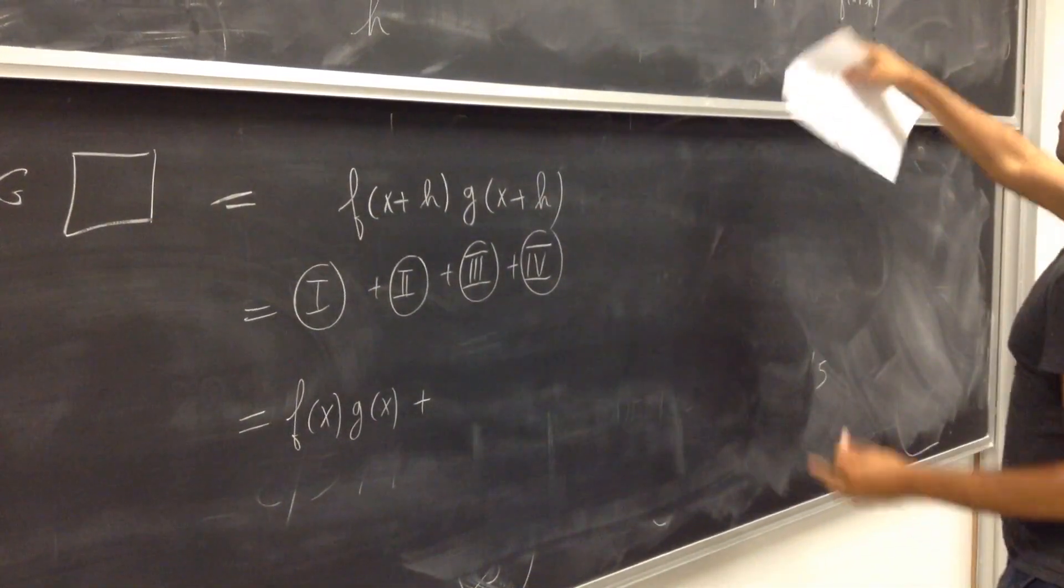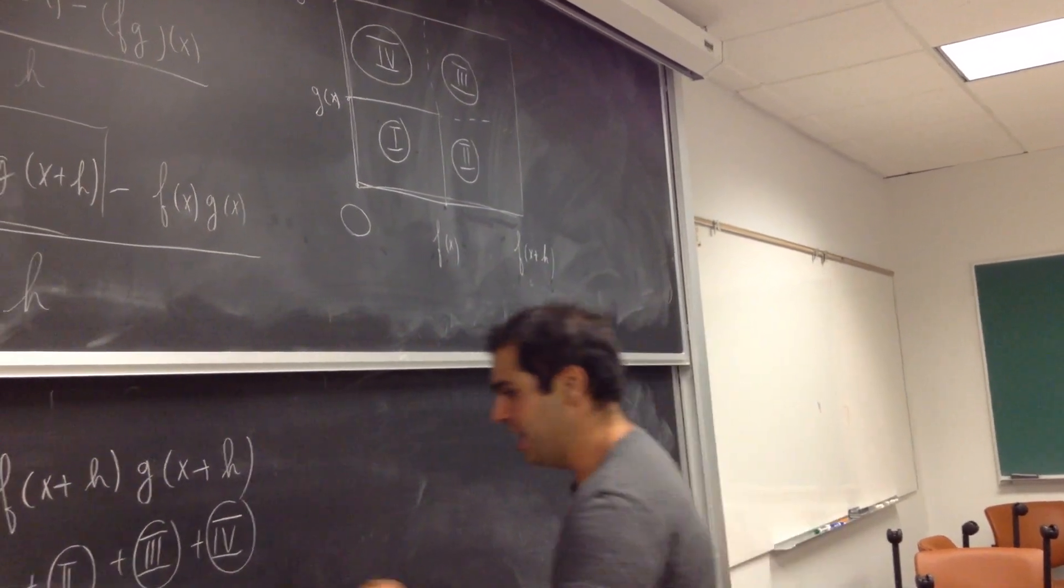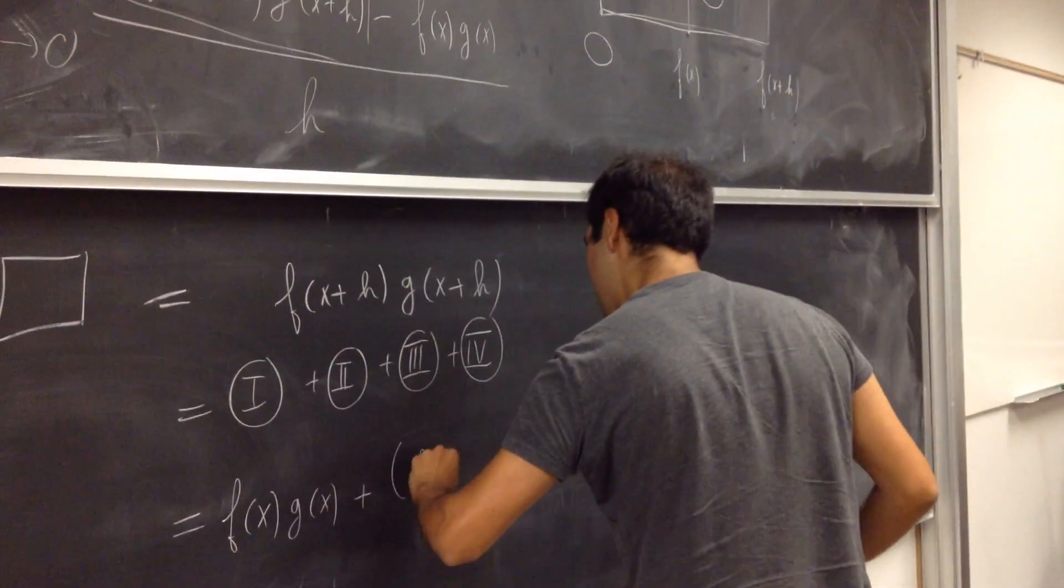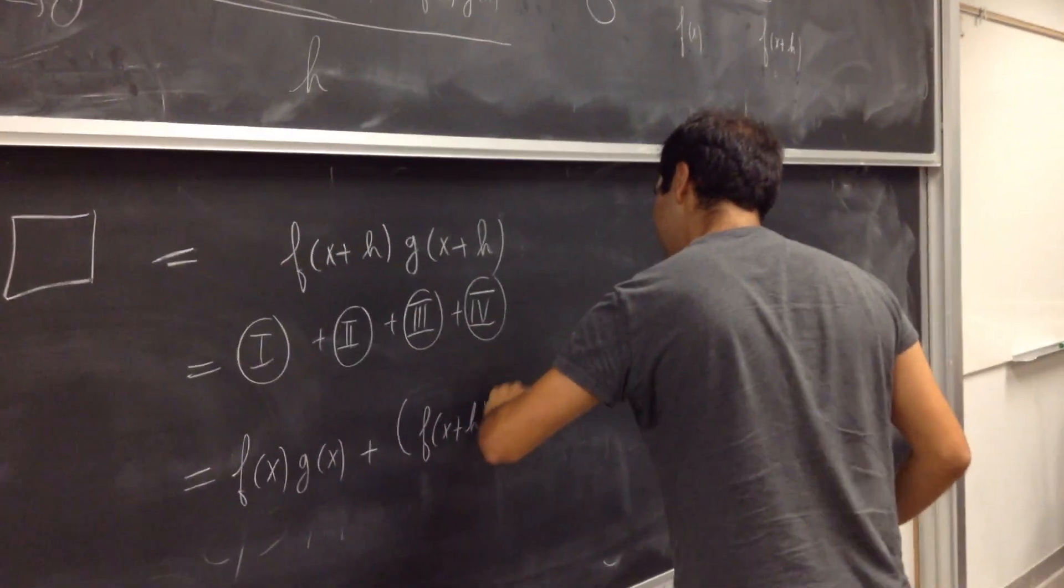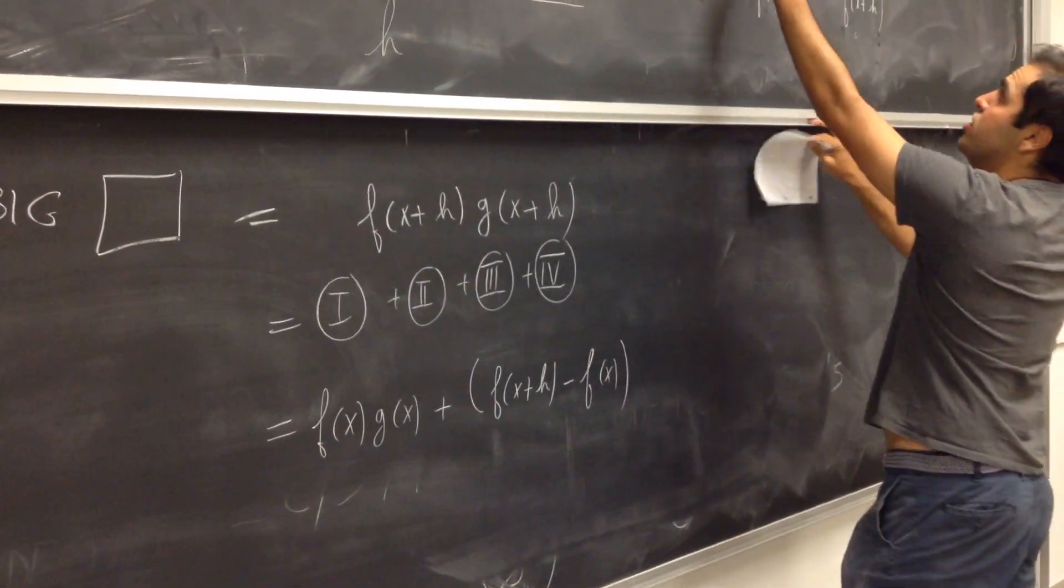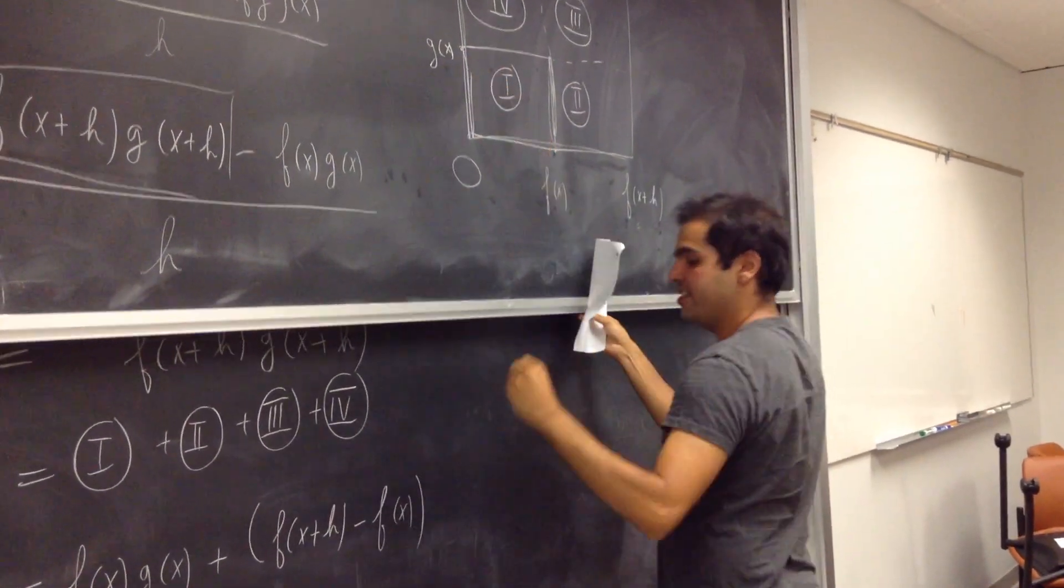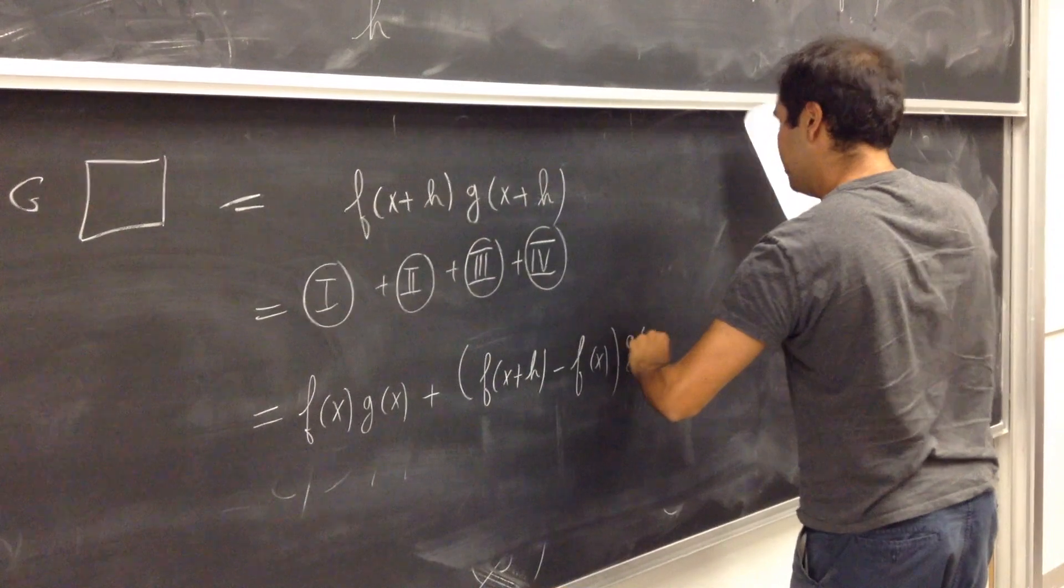That's for one. For two, let's see, the base is this thing which is f of x plus h minus f of x, and the height is just g of x. So this height here is the same as this height, which is g of x.